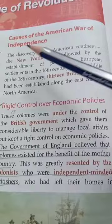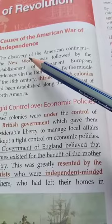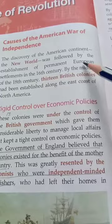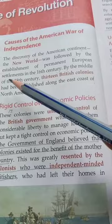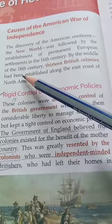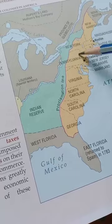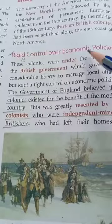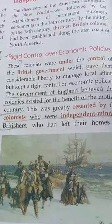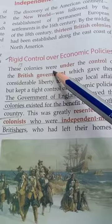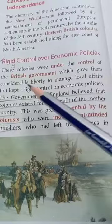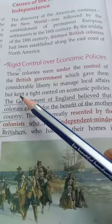The discovery of the American continent, the new world, was followed by the establishment of permanent European settlement in the 16th century. By the middle of the 18th century, 13 British colonies had been established along the east coast of North America. The first cause was rigid control over economic policies. These 13 colonies were under the control of the British government, which gave them considerable liberty to manage local affairs, but kept a tight control on economic policies.